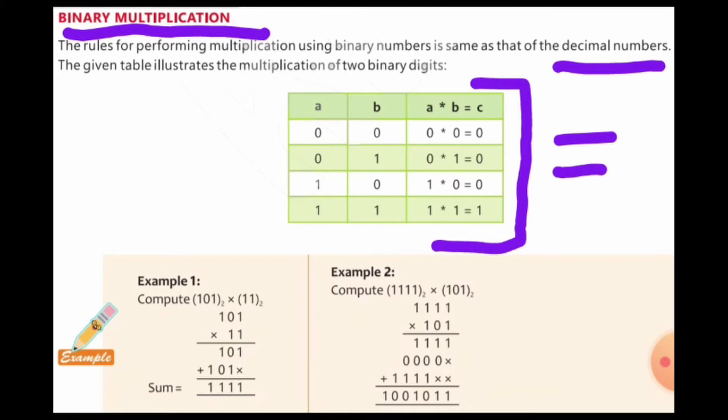0×1 is 0, again same. 1×0 is 0, this is also same and 1×1 is 1, this is also same.